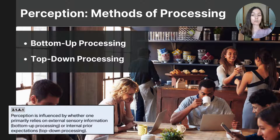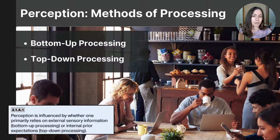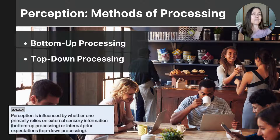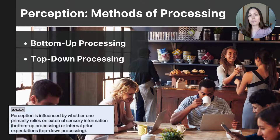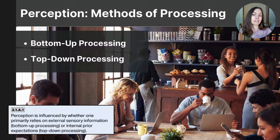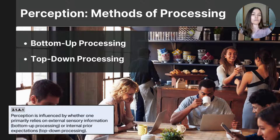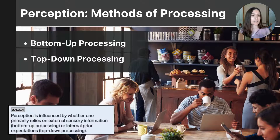Top-down processing involves interpreting sensory information based on prior knowledge, experiences, and expectations. This method is used when the brain encounters familiar stimuli and quickly draws on memory or context to make sense of it. For example, if you're a regular at a coffee shop and hear a sound resembling a coffee grinder, your brain might immediately identify it as such based on past experience — but turning to look, you might actually find they've gotten a new smoothie blender. Your initial perception was shaped by expectations, not sensory input alone. To summarize: bottom-up processing starts with individual sensory information and pieces it together; top-down processing compares sensory information to ideas, expectations, and previous experiences already housed in the brain.